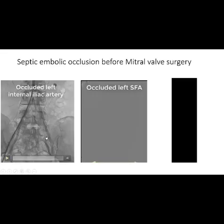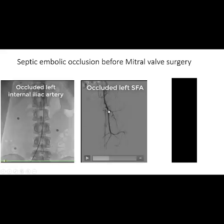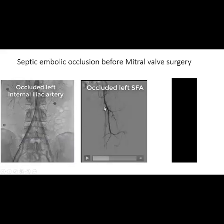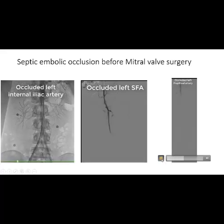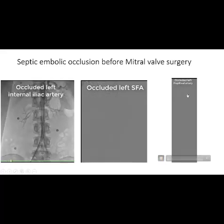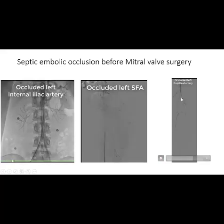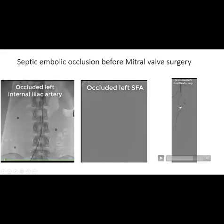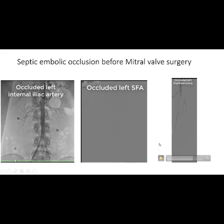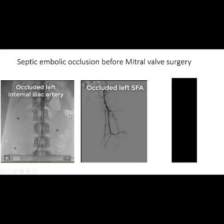You can see the occlusion of the internal iliac artery on the left side. You can also see the occlusion of the left superficial femoral artery at the beginning of this artery, the occluded left popliteal artery at the distal portion, and occlusion of the proximal portion of the tibio-peroneal artery on the left side. So we have occlusion in three different arteries.